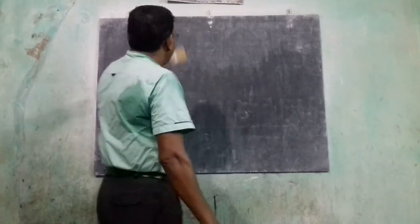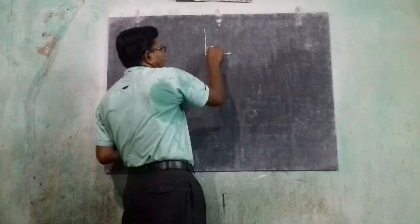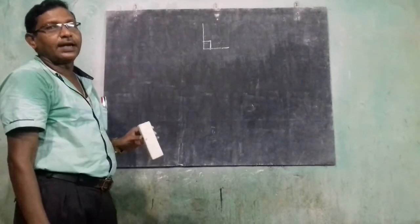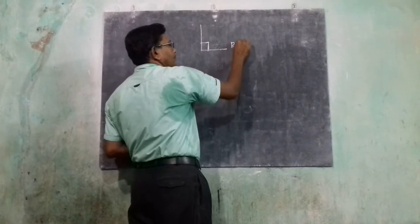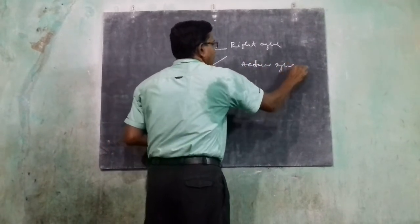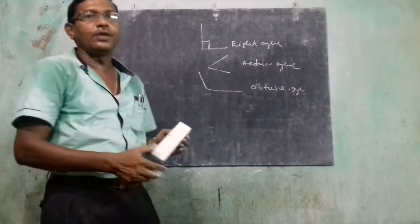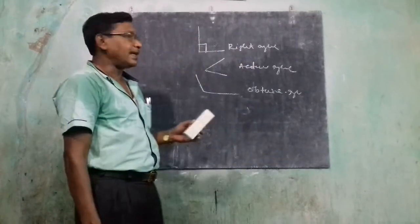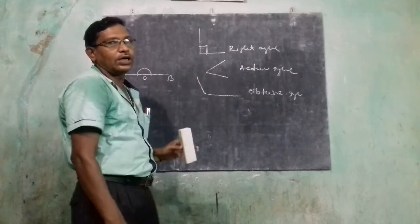Now, types of angles. A right angle has a measurement of 90 degrees. An acute angle measures more than 0 degrees but less than 90 degrees. An obtuse angle measures more than 90 degrees but less than 180 degrees. A straight angle, such as angle AOB, measures exactly 180 degrees and is known as a straight angle.